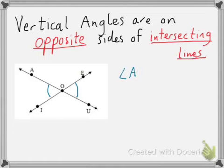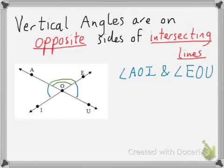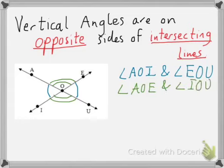So these angles, angle AOI and angle EOU are vertical angles. But we also have vertical angles on different sides of the intersection. Being this one and that one. That would be angle AOE, that's vertical to angle IOU. So in this picture we have two sets of vertical angles that are on opposite sides.